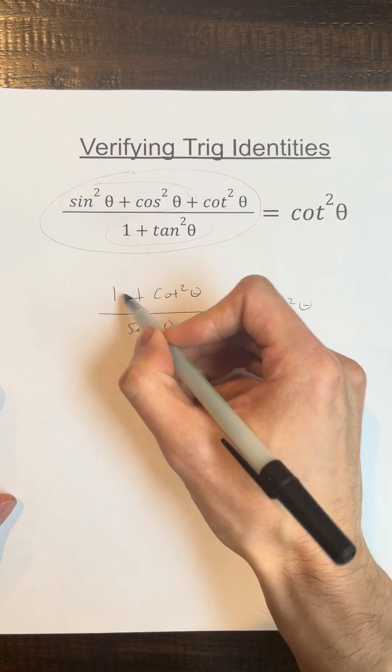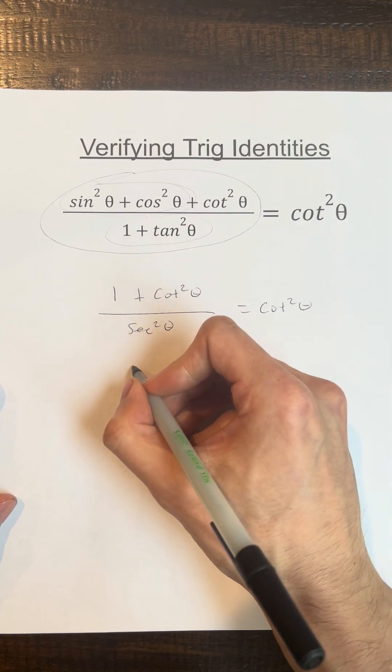You also need to remember 1 plus cotangent squared theta is equal to cosecant squared theta.